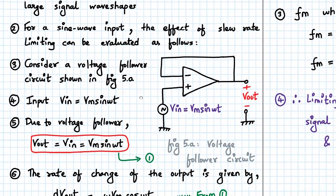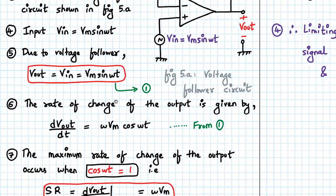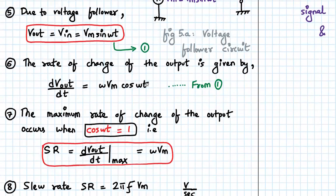So the following scenario is that we consider a voltage follower circuit. So input is applied as Vm sin omega t. So as we know voltage follower circuit output will also follow the same that is Vm sin omega t. So the rate of change of output with respect to time is given by dVout by dt equals omega Vm into cos omega t. This is our equation number 2.